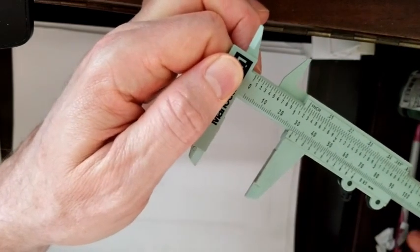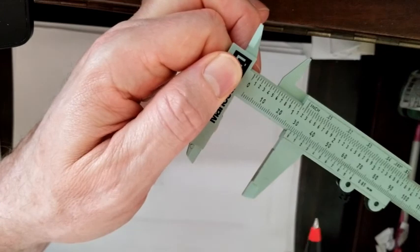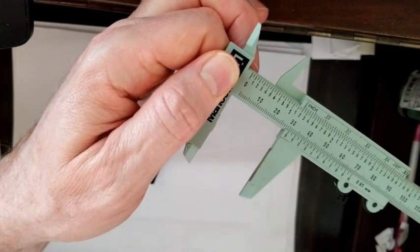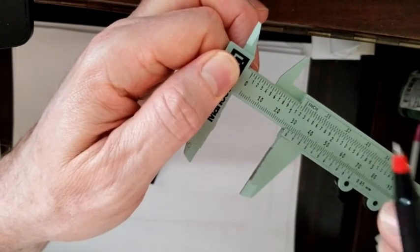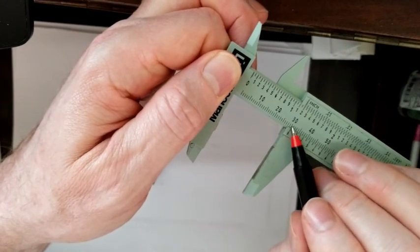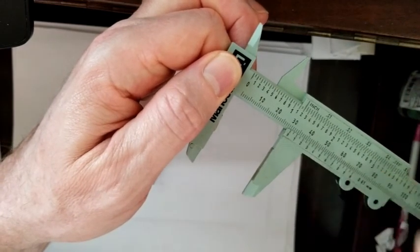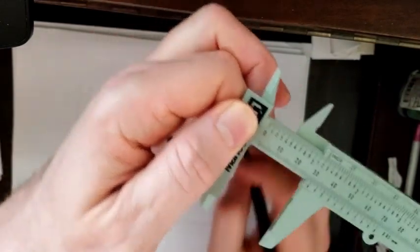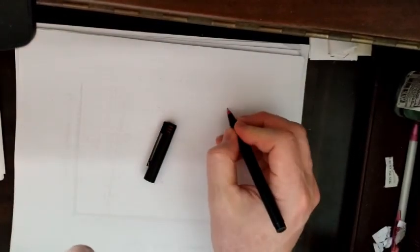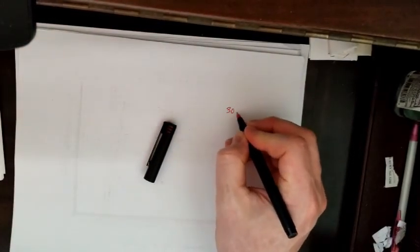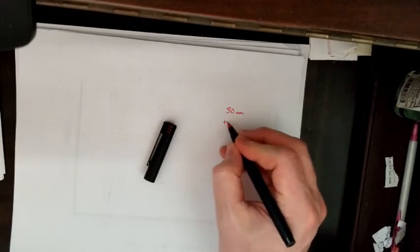Now some vernier calipers will have centimeters on the scale, in which case it would be between 3 and 3.1, but this is millimeters. So it's between 30 and 31. So in terms of the distance, I would write down it's between 30 and 31, so I'd write down 30 millimeters plus.